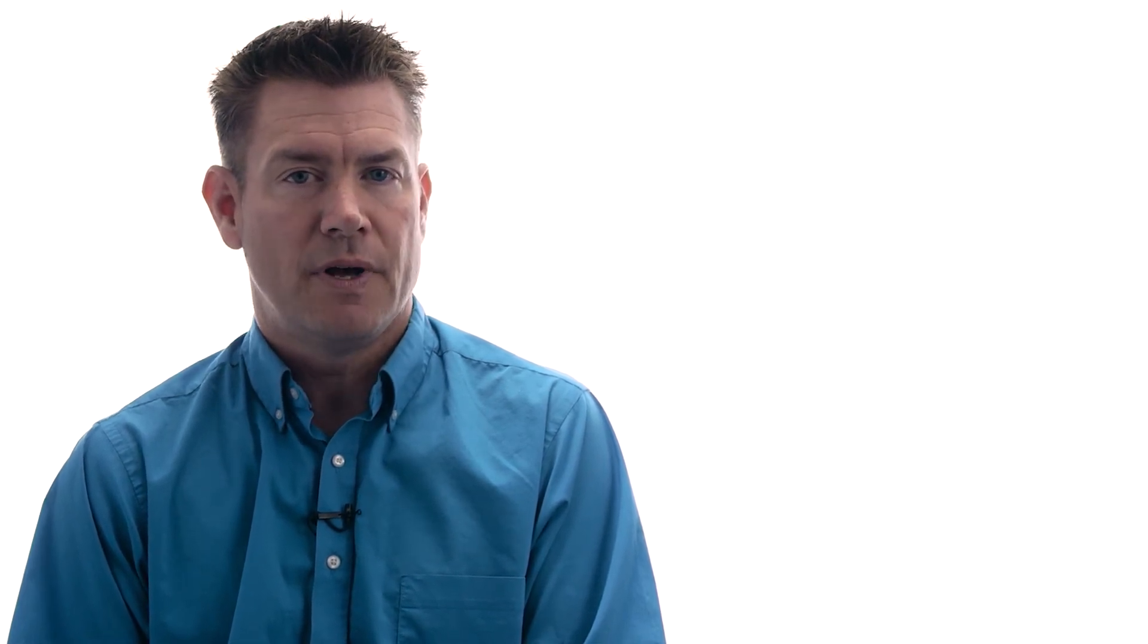Here is an example of a system that is using an active end-of-line device. When there is a fault in the circuit, this is how Vocea alerts us.